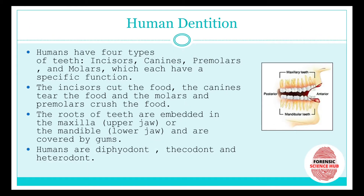First, a small description about human dentition. There are four types of teeth: incisors, canines, premolars, and molars, and they have different functions. For example, incisors cut the food because their edges are very sharp, canines are used for tearing food, and molars and premolars are used for crushing food.